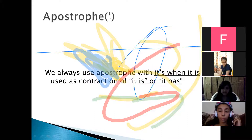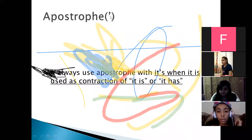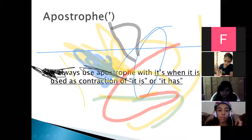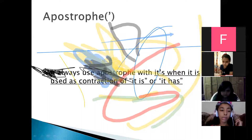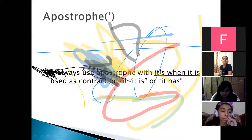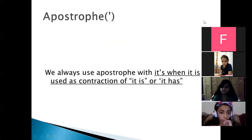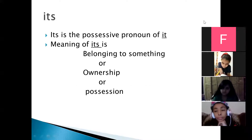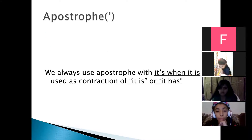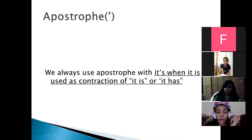The apostrophe is an indication that some letter has been dropped. In 'it's,' the complete form is 'it is.' When writing the contraction, instead of writing the 'i' of 'is,' we put an apostrophe — giving us 'it's.' Similarly, in the case of 'it has,' the letters 'h' and 'a' are dropped, and we write the short form 'it's.' So 'it's' with apostrophe is the short form of either 'it is' or 'it has.'